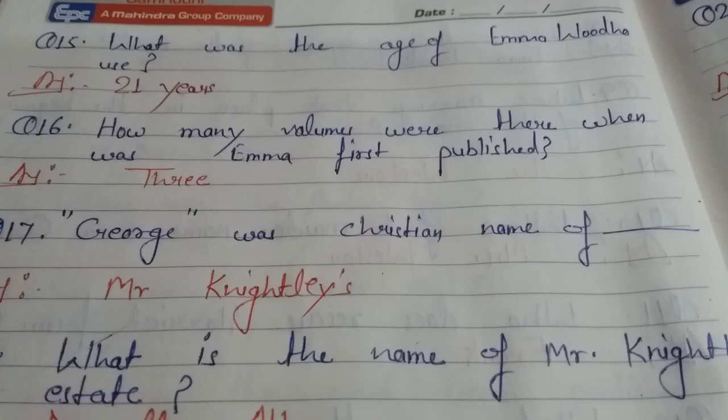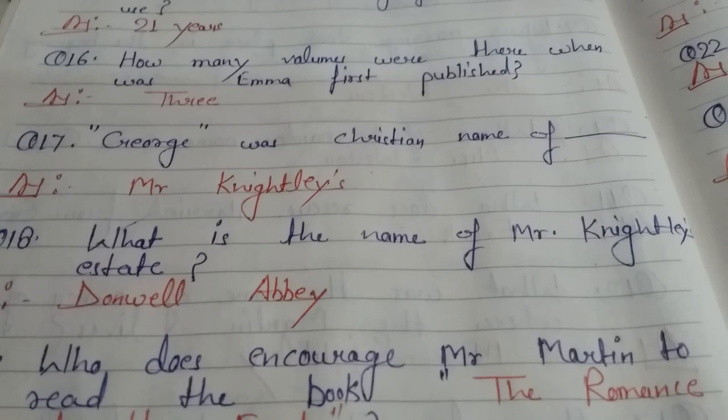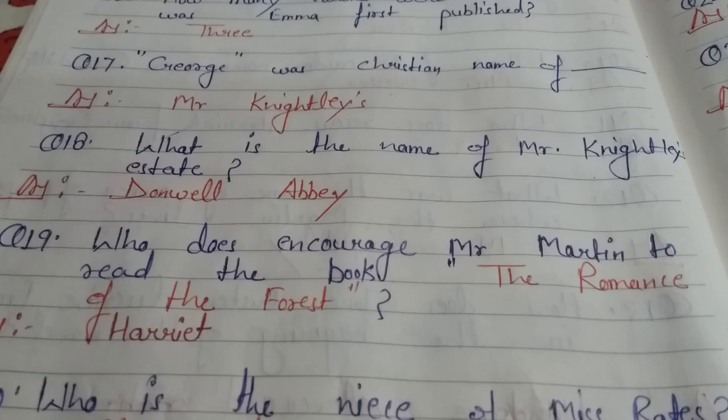Question 18: What is the name of Mr. Knightley's estate? Mr. Knightley ka estate tha, us ka kya naam tha? The answer is Donwell Abbey. Donwell Abbey is the name of Mr. Knightley's estate.